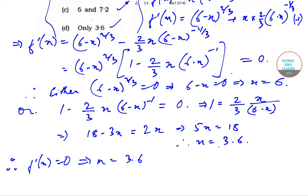So as you know that f'(x) = 0 implies that x = 3.6 over here or 6 as over here. So the correct answer is option (a).